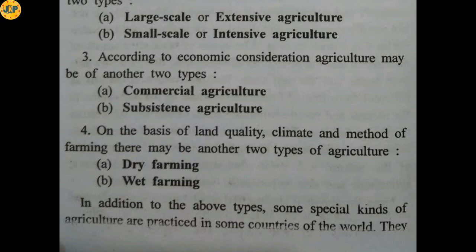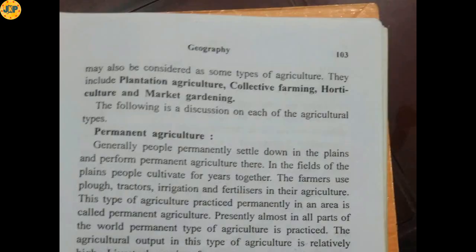On the basis of land quality, climate, and method of farming, there are two more types — dry farming and wet farming. In addition, some special kinds of agriculture are practiced in some countries, including plantation agriculture, collective farming, horticulture, and market gardening.